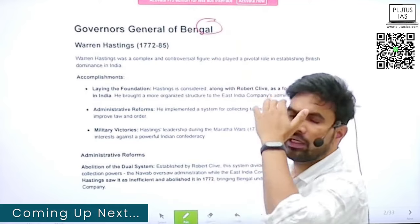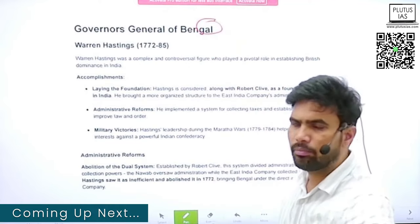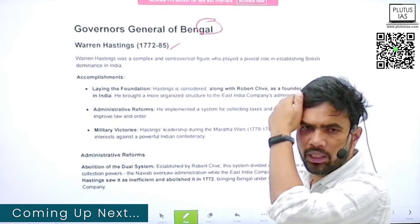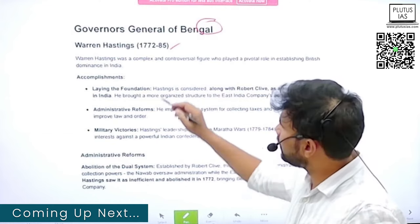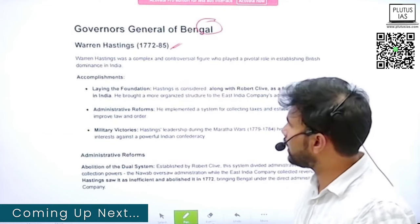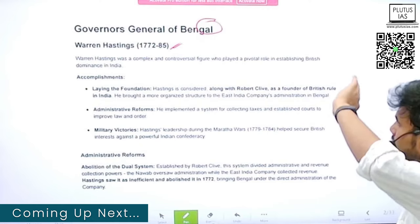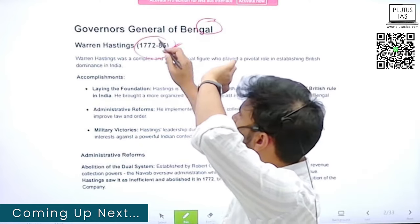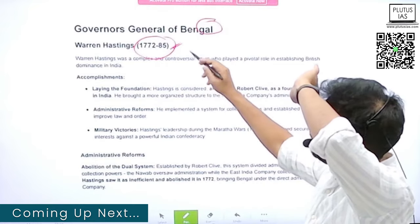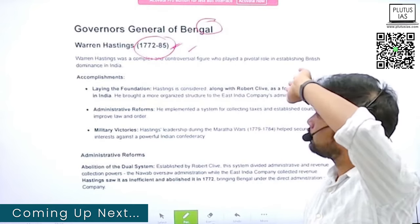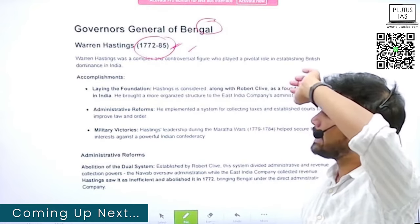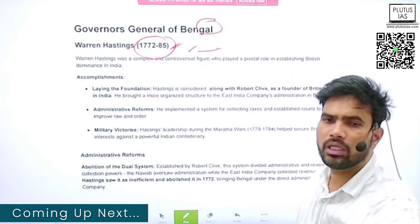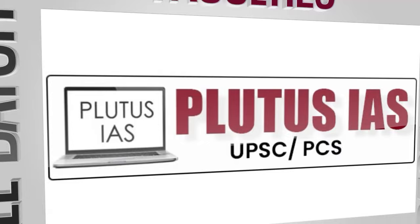First we will study about the Governor General of Bengal. Warren Hastings was the first prominent Governor General of Bengal. He was in the position of Governor General of Bengal from 1772 to 1785, which is a very long, considerably long period of time.